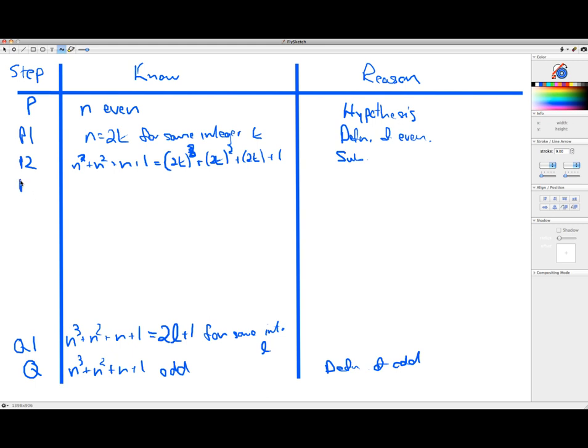And now maybe the next thing should be what seems to be natural is just to expand all these powers on the right-hand side. So that would be 8k cubed plus 4k squared, easier algebra than the previous problem, plus 2k plus 1. So that's just algebra. If it can even rise to that level.